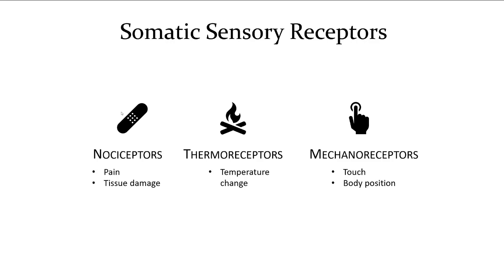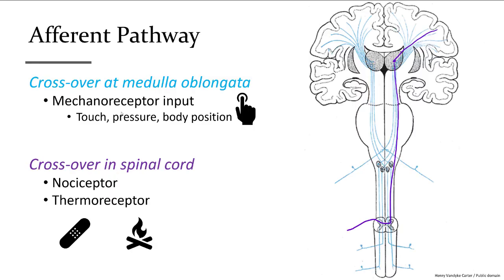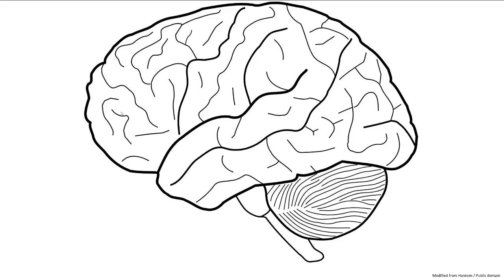Somatic senses are sensations received from the body including pain, touch, pressure, temperature, and body position or proprioception. Sensations from the right side of the body are transmitted to the left side of the brain and vice versa. All sensory information from the body arrives at the thalamus on the opposite side from where the sensation was felt, and is then directed to the appropriate location on the cerebral cortex for awareness.